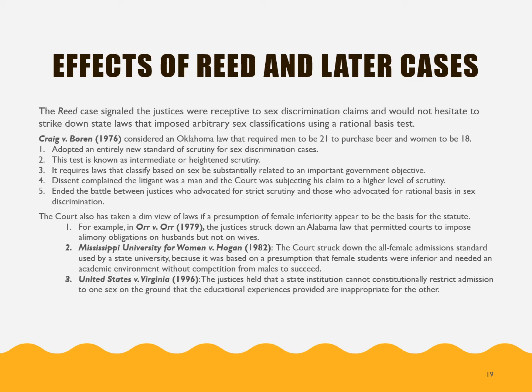In Craig versus Boren in 1976, they considered a law that allowed men who were 21 to purchase beer but allowing women who were only 18. Perhaps the rationale was that 18-year-old women might be more mature, or that 18-year-olds would be more likely to be in relationships with men a year or two older. They said that was impermissible and they created a new standard — an intermediate or heightened scrutiny standard. It required that laws that classify on the basis of sex be substantially related to an important government interest or objective.